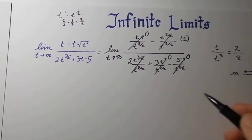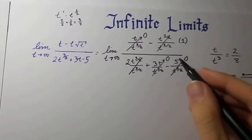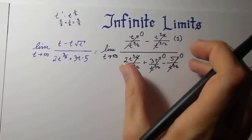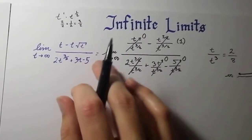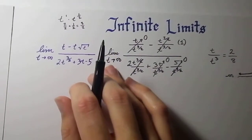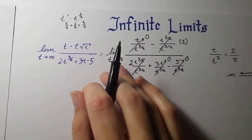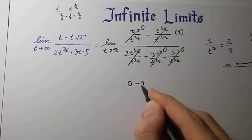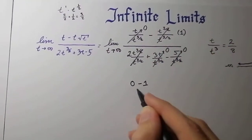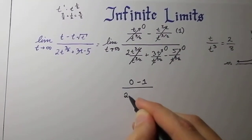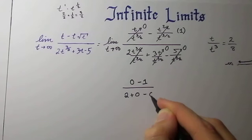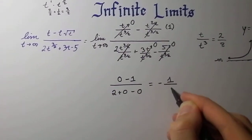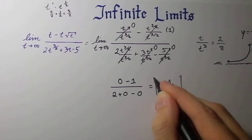Now let's evaluate this. Since we're going to be evaluating, we don't need to write the limit of t as t approaches infinity anymore, so it's just going to be 0 minus 1. That's why I say remember that 1. Divided by 2 plus 0 minus 0. And of course, that's going to result in negative 1 over 2. And that is the answer.